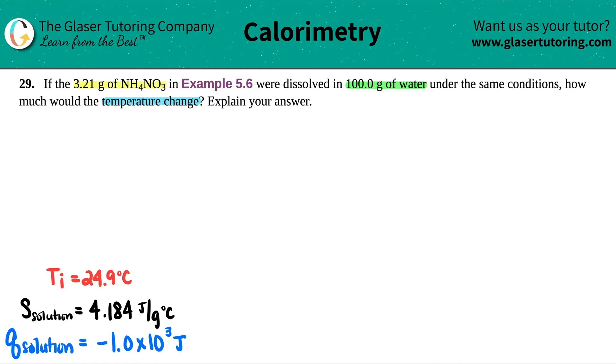So I went back to example 5.6 for you guys, and I wrote down the most important part that we're going to use to figure out this problem. So basically, under their conditions, they found out that they were going to release 1.0 times 10 to the third joules of heat.